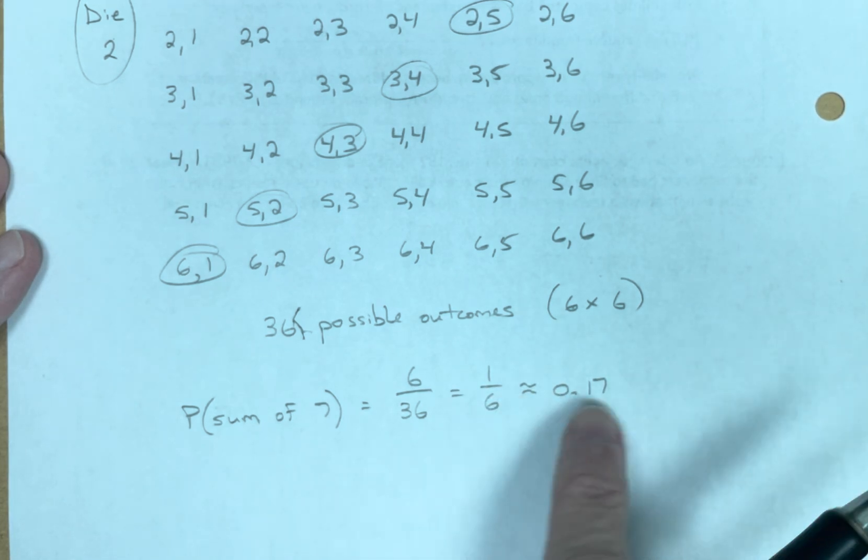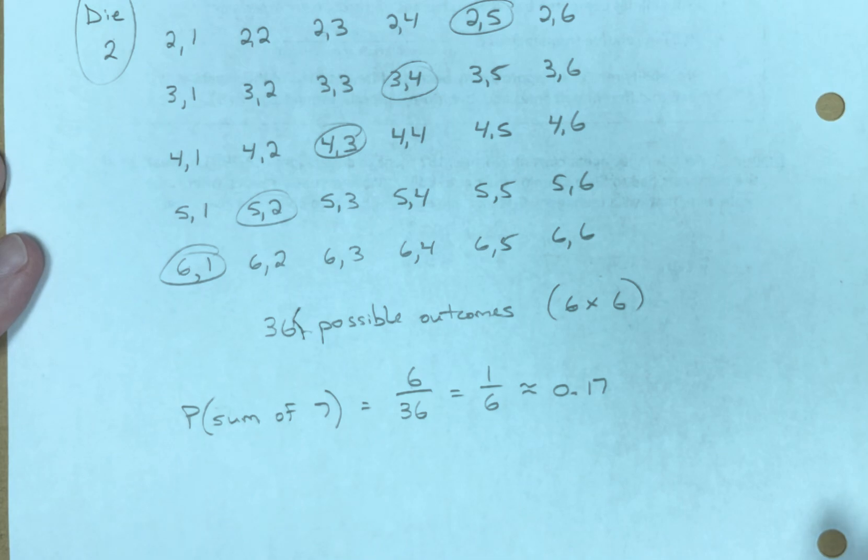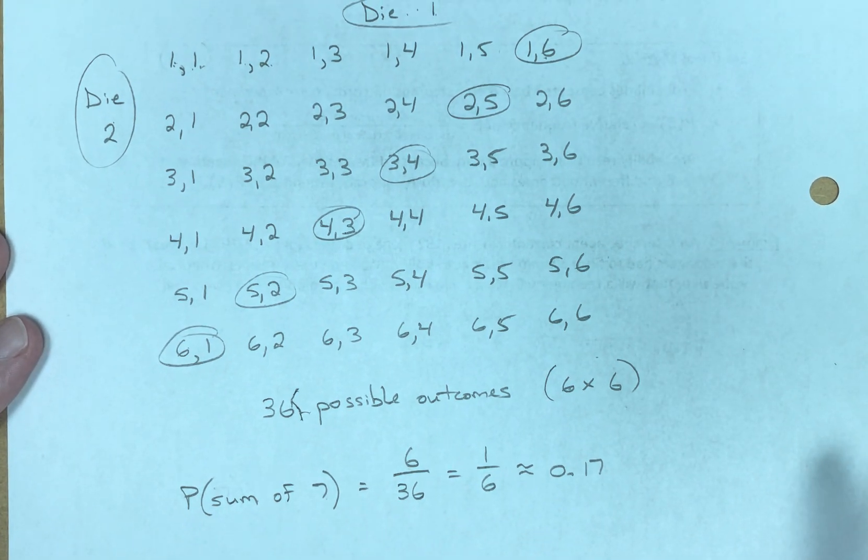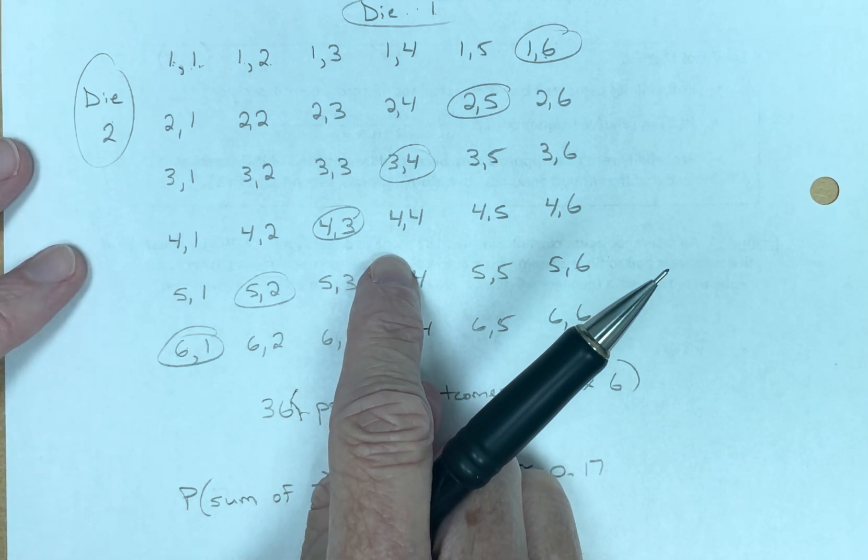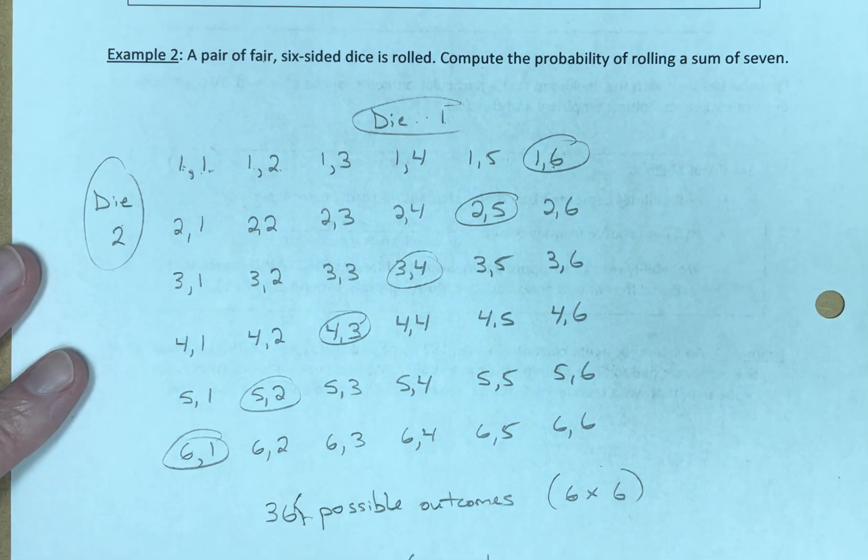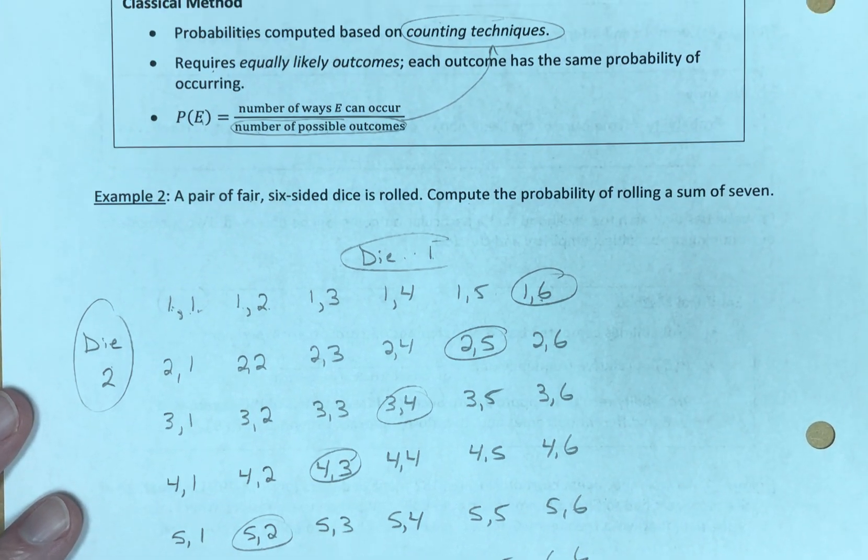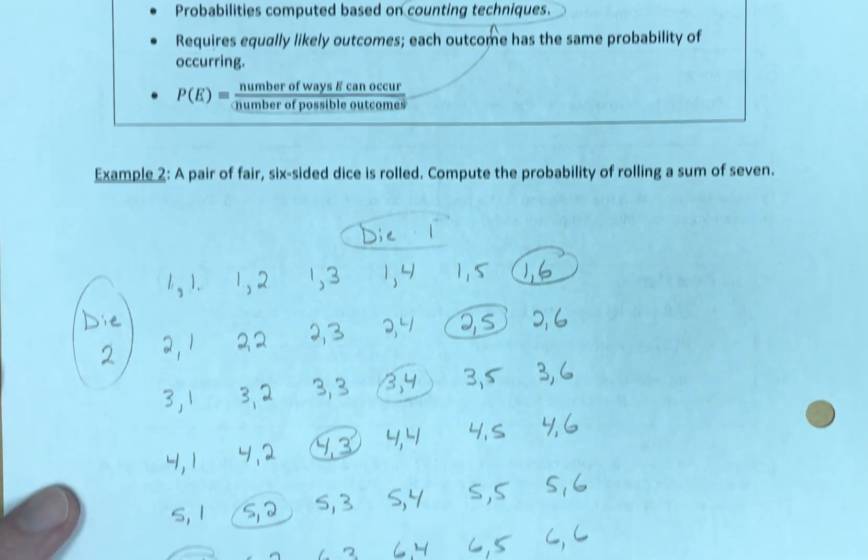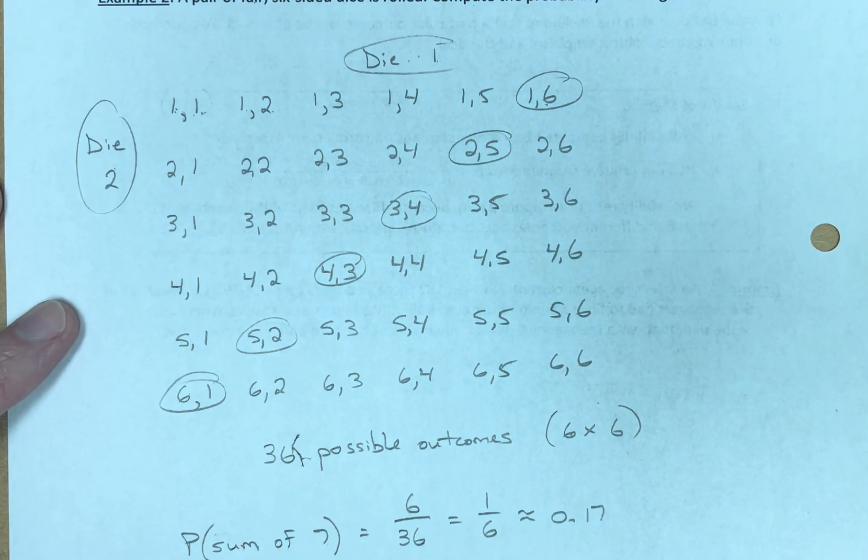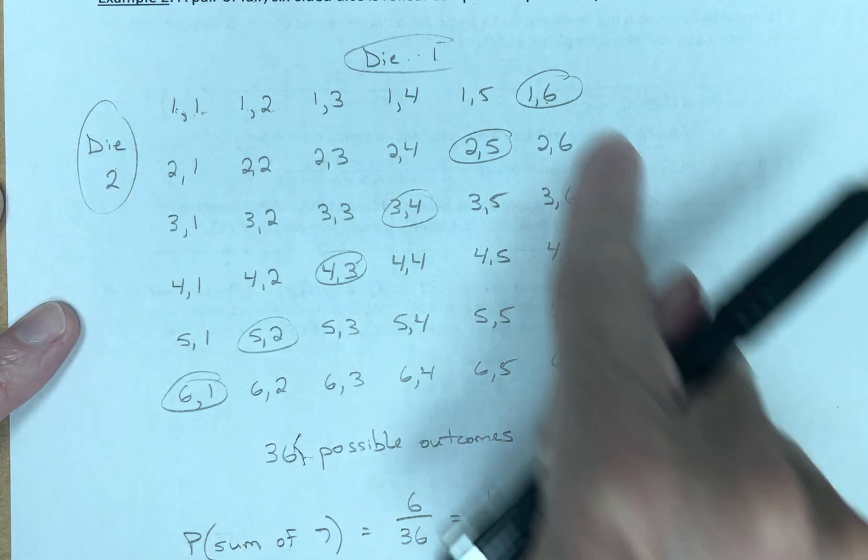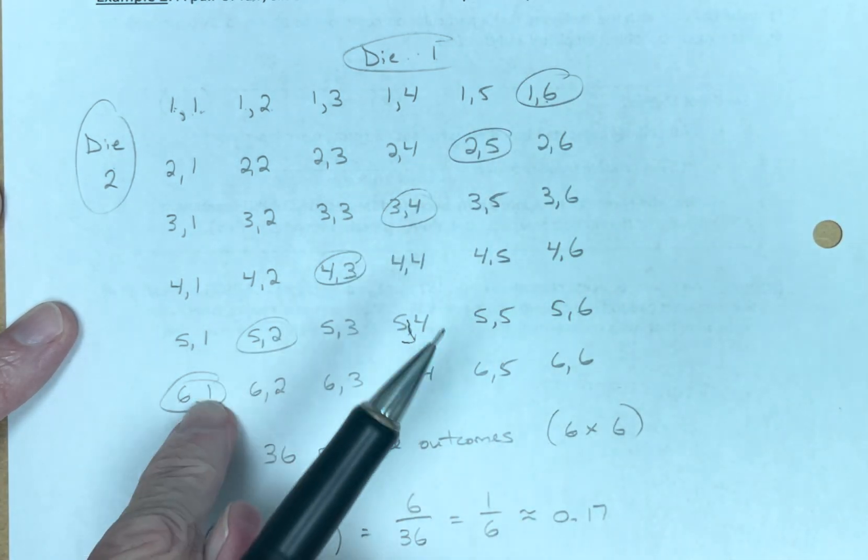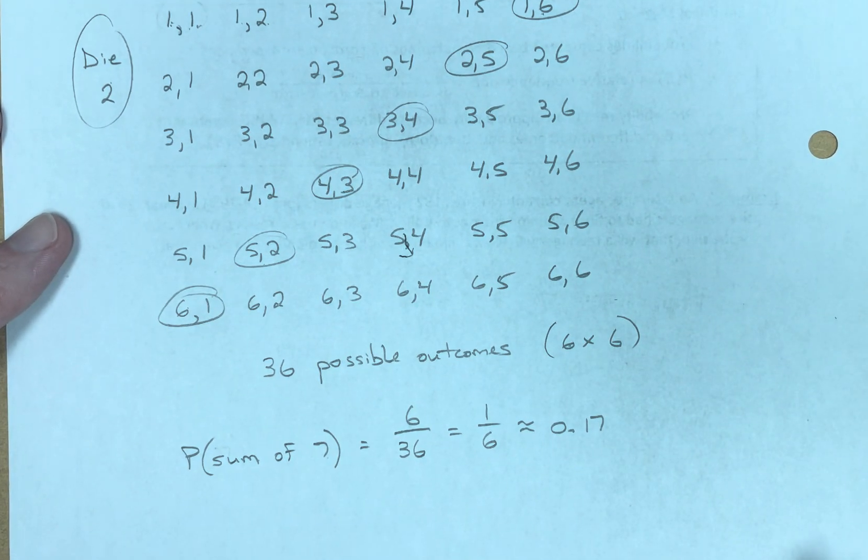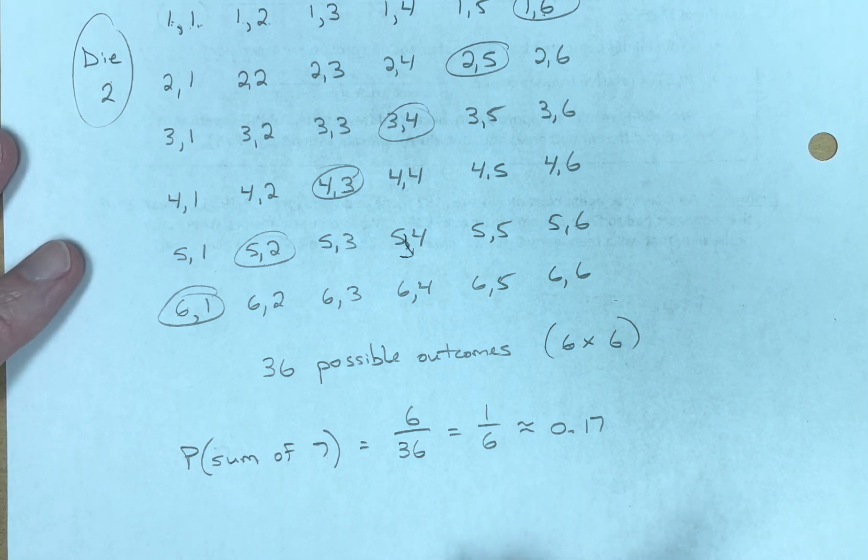Fraction, decimal between zero and one. So we didn't do an experiment, right? We didn't roll the two die 50 times and see how many sevens came up. We use counting techniques. We use counting techniques to determine, in this case I listed them all, how many total outcomes there were - 36. Then we looked at how many were seven, and we said the probability of rolling a seven mathematically, without doing an experiment, would be one out of six.